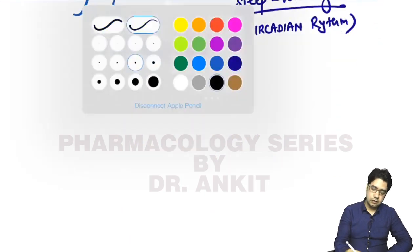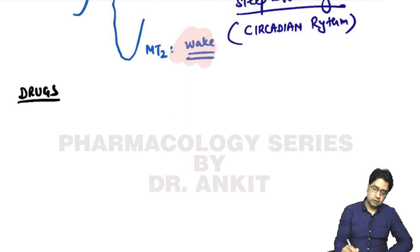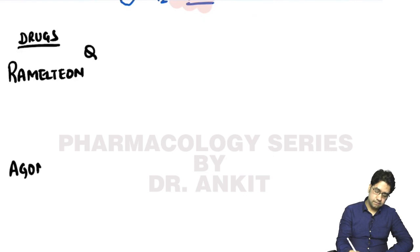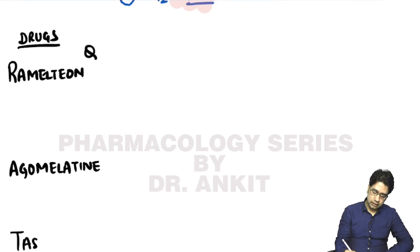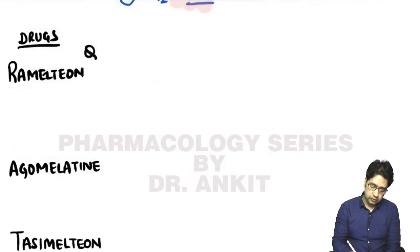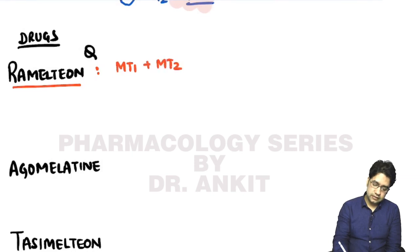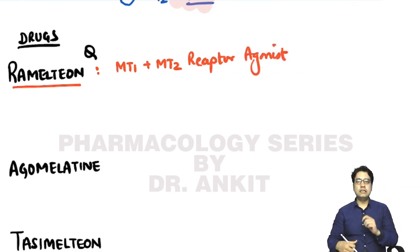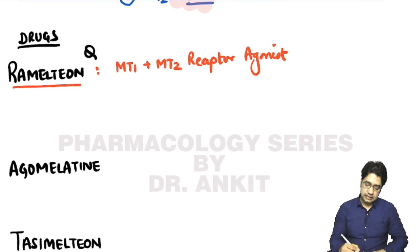Three drugs act on melatonin receptors. The first, very important drug, is ramelteon. Ramelteon is an MT1 and MT2 receptor agonist — similar to melatonin. In high dose it stimulates MT1 receptors, hence inducing sleep.